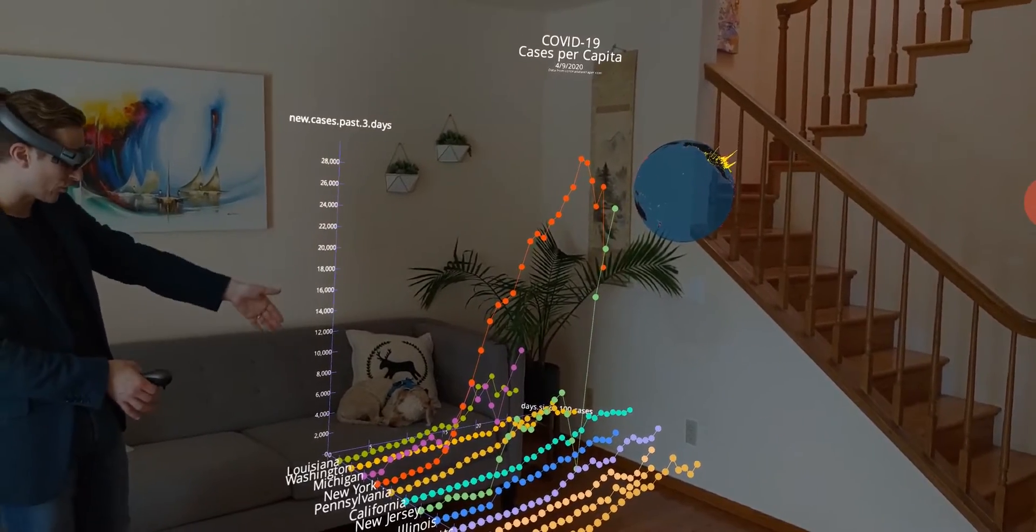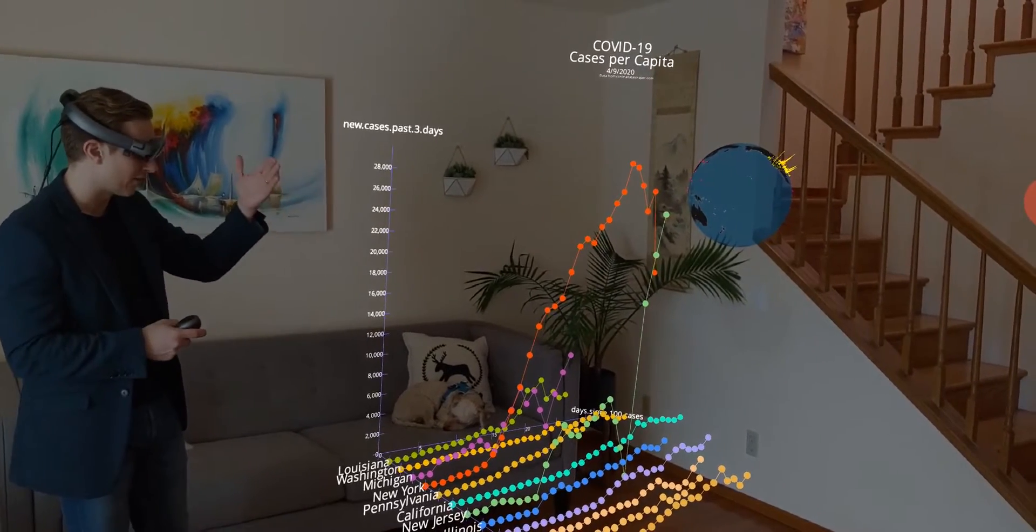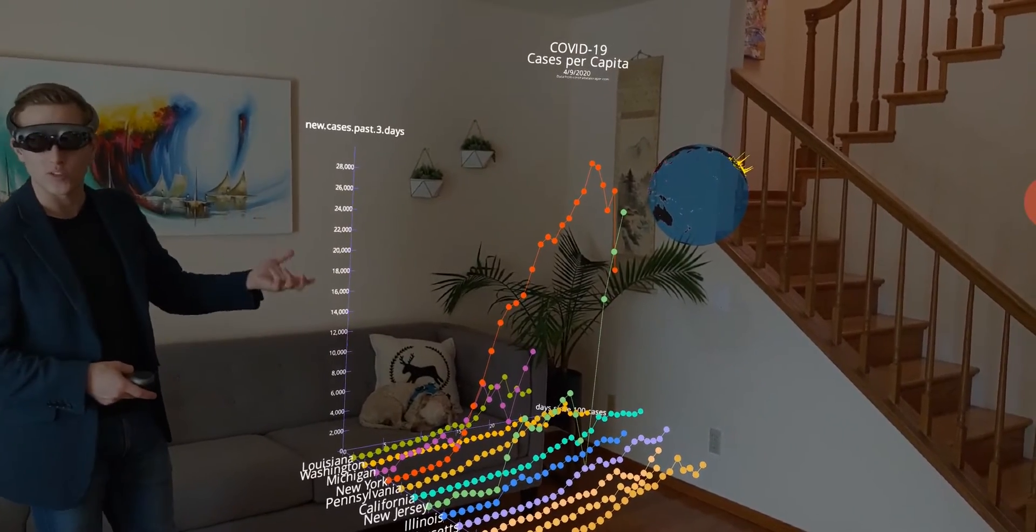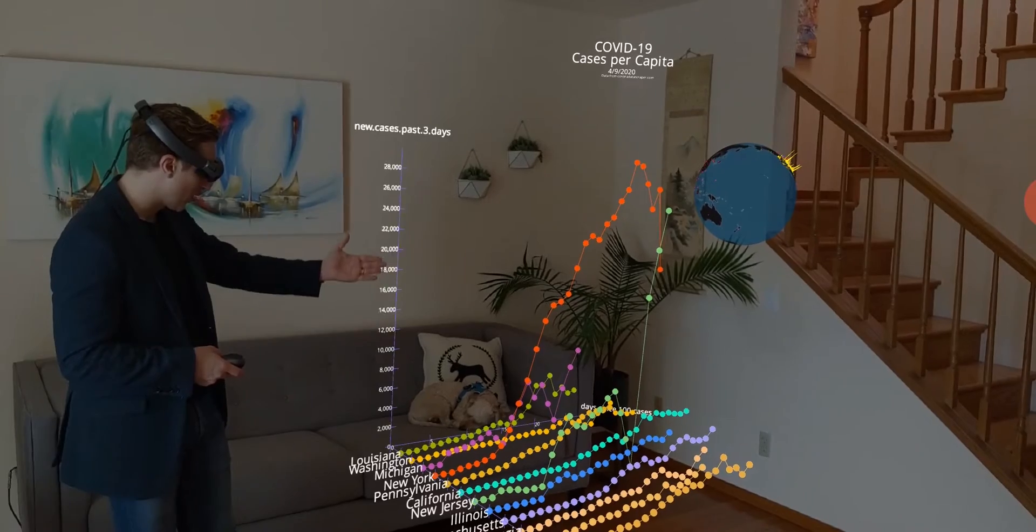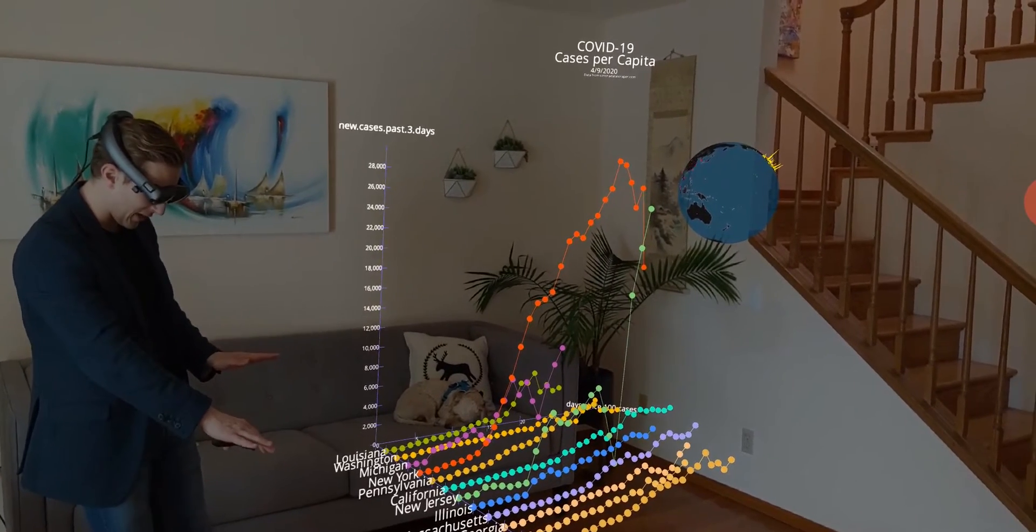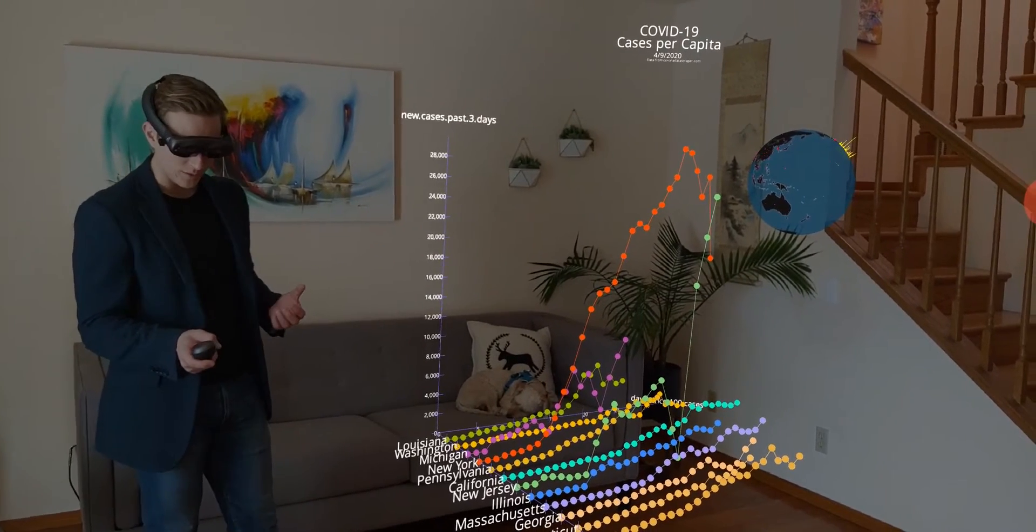New Jersey, this green line, is one of those, where it's still increasing quite dramatically. We're also seeing that in Louisiana. However, places like California and Washington have maintained relatively low numbers, despite their large populations.